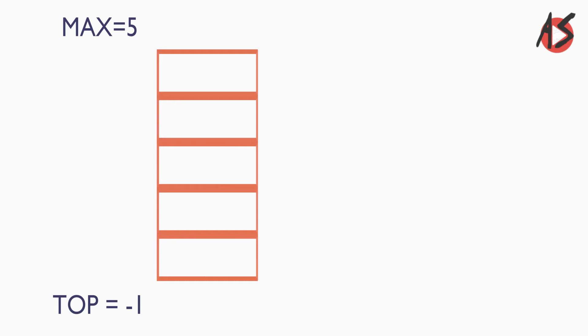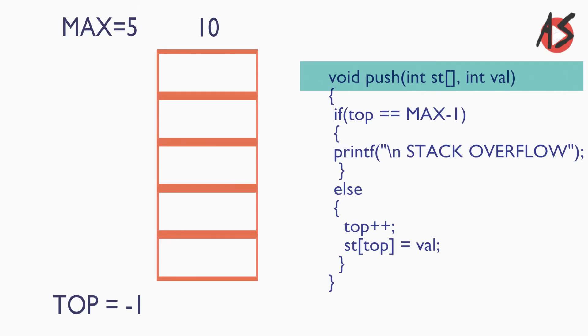Now we push value 10 in the stack. Here top is minus 1, that is not equal to max minus 1 which is 4, so the condition is false. So it goes in the else part and increments the top by 1 and stores it in the zeroth place of the stack.